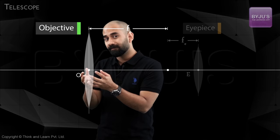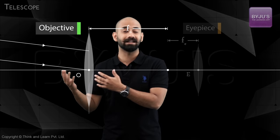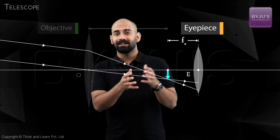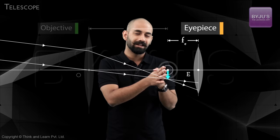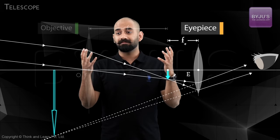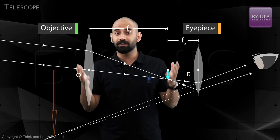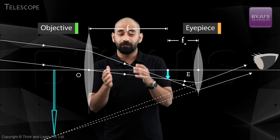What happens is the objective receives parallel rays because the object is extremely far off — almost at infinity. These parallel rays are focused by the objective, and it forms a real, inverted, and diminished image. Now the eyepiece is placed such that this image is formed at the focus of the eyepiece itself. Therefore, the eyepiece forms a virtual, inverted, and magnified image of this image, because this image acts as an object for the eyepiece. The image is inverted because the intermediate image is also inverted. So you finally end up with a virtual, inverted, and magnified image.